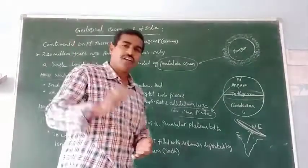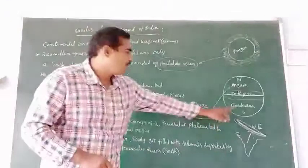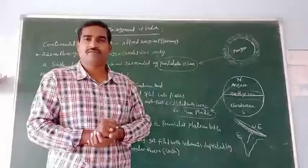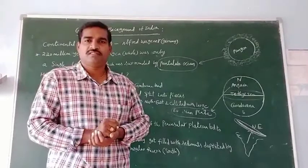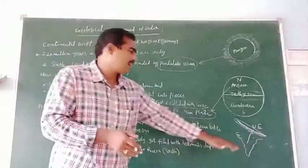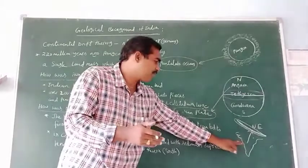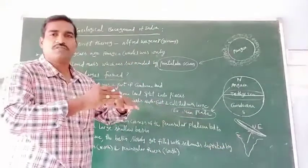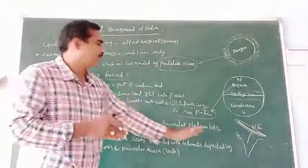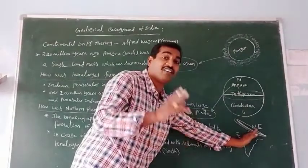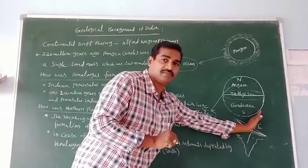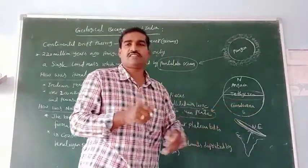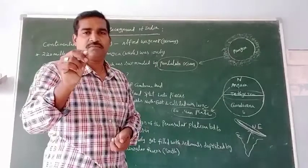200 million years ago, Gondwana land split into pieces. In the course of time, our Indian peninsular plateau moved towards the north direction and collided with the large Eurasian plate.